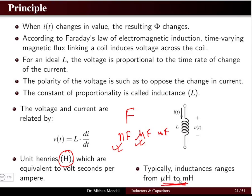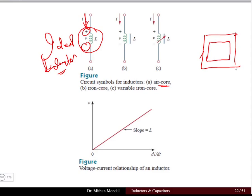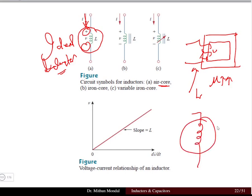There are different symbols used to represent different types of inductors. The basic symbol represents an ideal inductor — one which has no losses — and is drawn in accordance with passive sign convention. This symbol represents an air core inductor, meaning the magnetic material here is air with no ferromagnetic material.